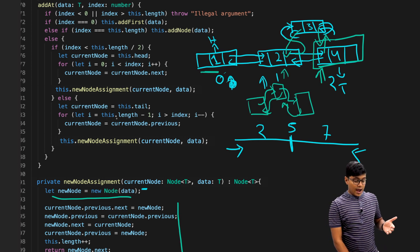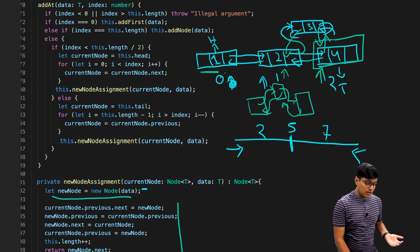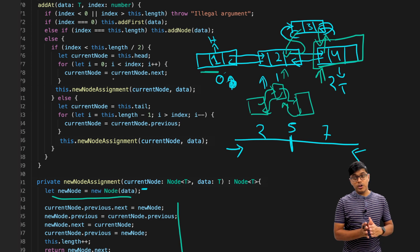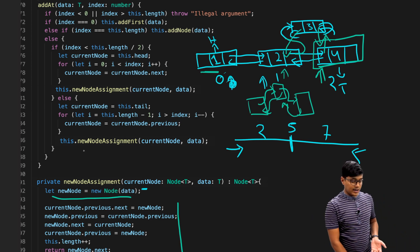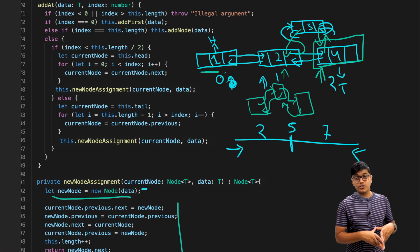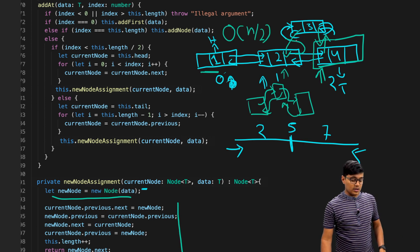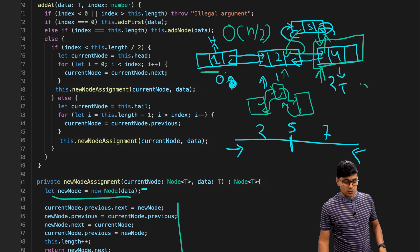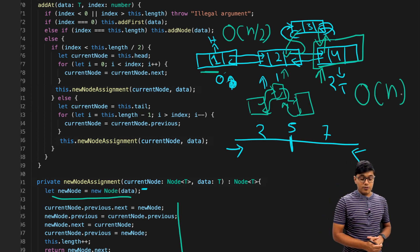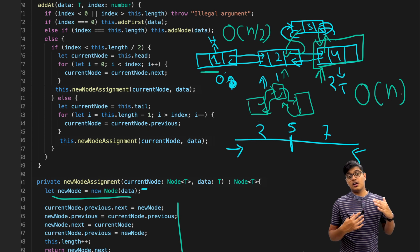If you are inserting at index 7 in a list of length 10, we assign current node as tail and traverse backward instead of forward, then call the same method. So instead of going from the front we go from the back. The time complexity is O(n/2), but as n tends to infinity, n/2 is still O(n). Adding at the first or last position is constant time O(1).